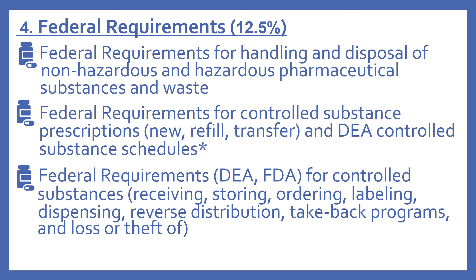The last knowledge area of the PTCE is federal requirements, about 12.5% of the exam. The things you need to know include federal requirements for handling and disposal of non-hazardous and hazardous pharmaceutical substances and waste, federal requirements for controlled substance prescriptions like new, refill, and transfer prescriptions, and the DEA controlled substance schedules. Also included are DEA and FDA requirements for controlled substances including receiving, storing, ordering, labeling, dispensing, reverse distribution, take back programs, and loss or theft of those products.